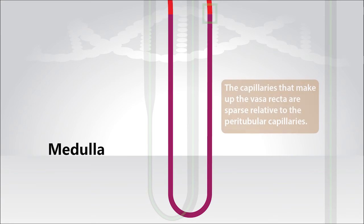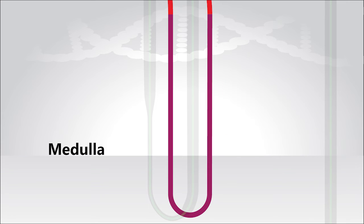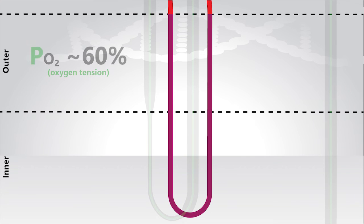We should point out that the capillaries that make up the vasa recta are sparse, relative to the peritubular capillaries, which are rather abundant. This is consistent with the fact that the medulla receives only 10% of total renal blood flow. This means that the oxygen tension within the medulla will be about 60% of that seen in the cortex.